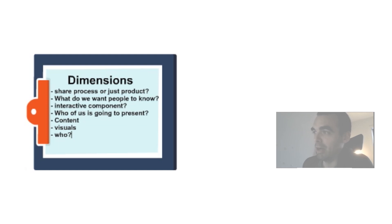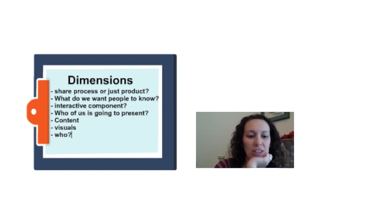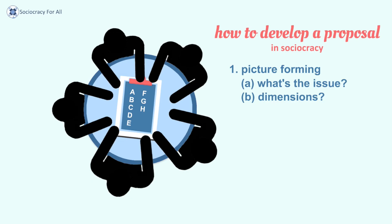You will notice when you're coming to an end of picture forming when people start passing. 'I don't have any dimensions to add.' 'Everyone pretty much covered anything I thought of in terms of elements.' The facilitator checks whether everything is written down by the secretary. 'Damien, did you get all that?' 'I did, but it was difficult.' We only want to make the transition to the next step when everybody's on the same page.